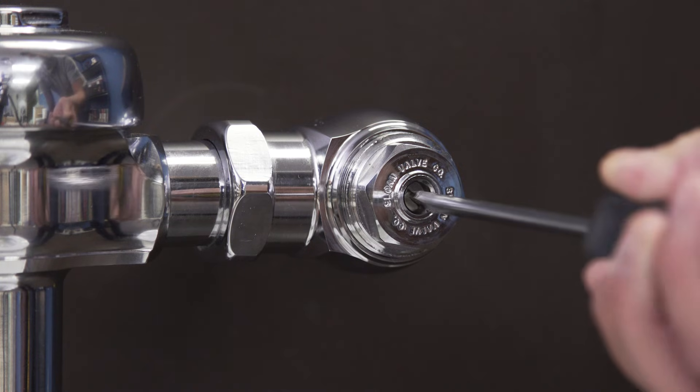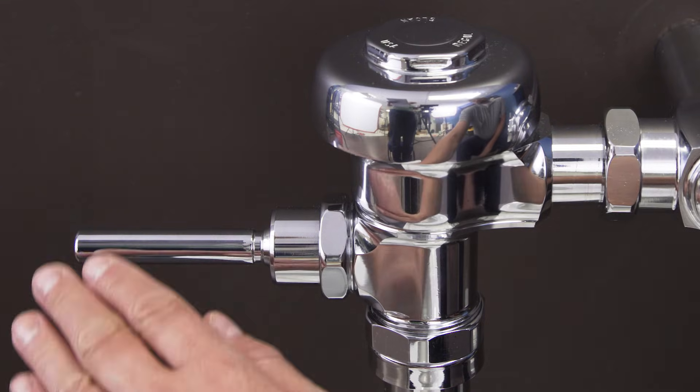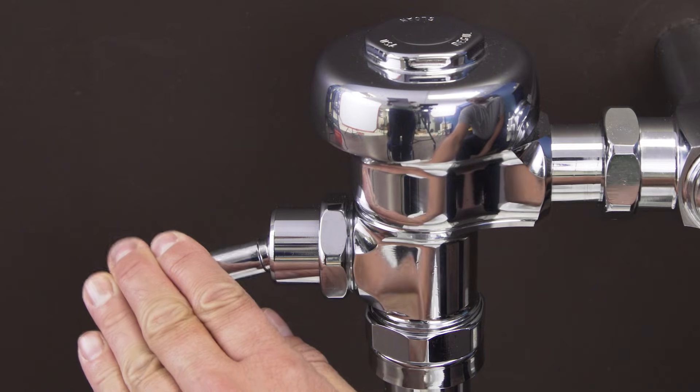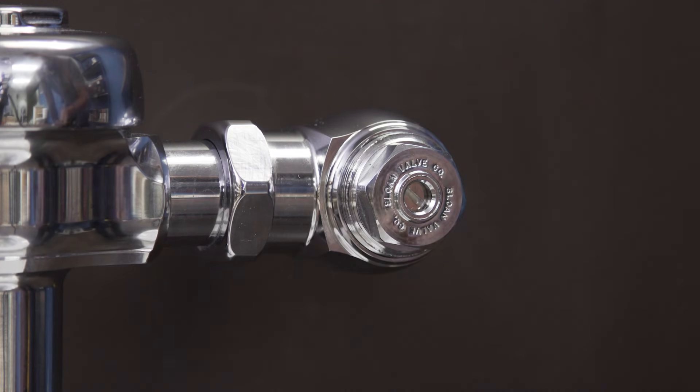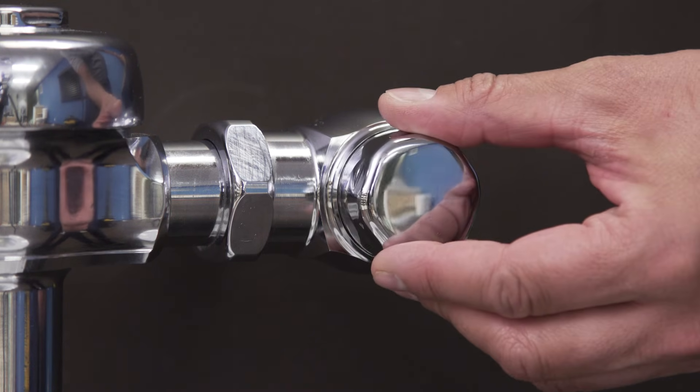Turn on the water by opening the control stop. Now test the flushometer and adjust the control stop until you get a normal flush with a quiet operation. Then finally, replace the cap.